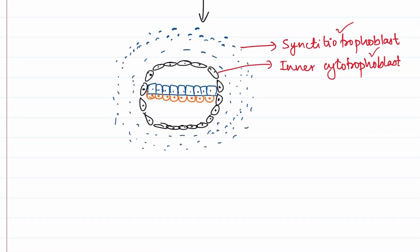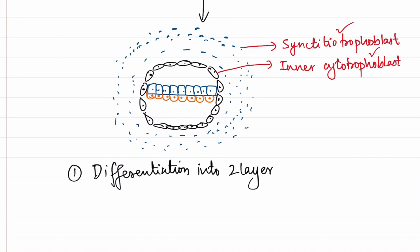The first event we can write down is the differentiation of the trophoblast into two layers: the inner cytotrophoblast and the outer syncytiotrophoblast. What happens next is that the cytotrophoblasts begin to invade into the syncytiotrophoblast — that is the next event which occurs: the invasion of cytotrophoblast into the syncytiotrophoblast.